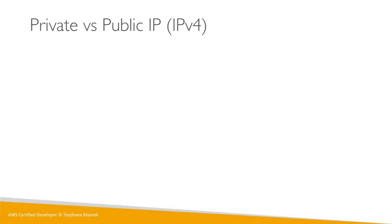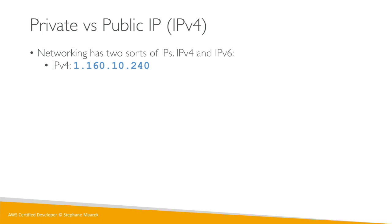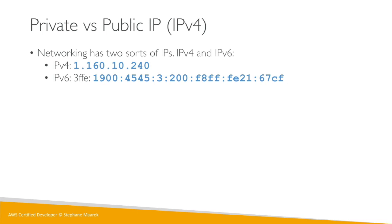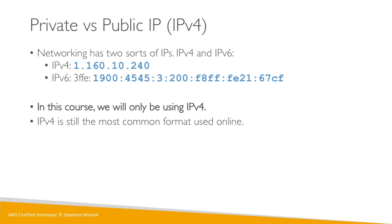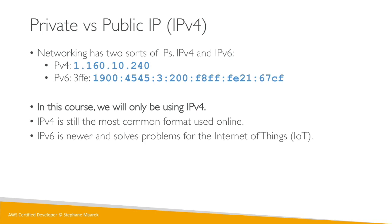We're getting into the concept of private and public IP. In networking there are two sorts of IP: IPv4 and IPv6. IPv4 is the most common — four numbers separated by dots. IPv6 is less common, using a long string of hexadecimal numbers and letters. In this course we'll be using IPv4, but AWS has support for IPv6 as well. IPv6 is more relevant for IoT, but we don't have any problems with IPv4 for now.